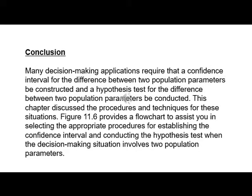Conclusion: Many decision-making applications require that a confidence interval for the difference between two population parameters be constructed and a hypothesis test for the difference between two population parameters be conducted. This chapter discussed the procedures and techniques for these situations. Figure 11.6 provides a flow chart to assist in selecting the appropriate procedures for establishing the confidence interval and conducting the hypothesis test.